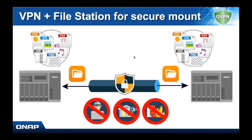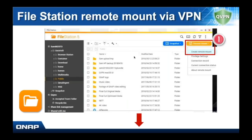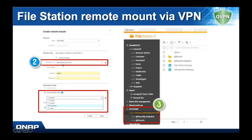Once you have a VPN server set up on one NAS, you can join another NAS to that VPN server as a VPN client. If one NAS is a client of the other NAS's VPN server, you can do encrypted file transfer through that heavily encrypted VPN tunnel — great for remote replication with sensitive data. You can do this using secure mount: once your NAS is a client of the VPN server, go to File Station, click Remote Mount, click Create Remote Mount. Then you need the IP address of your VPN server, username, password, and what folder you're mounting.